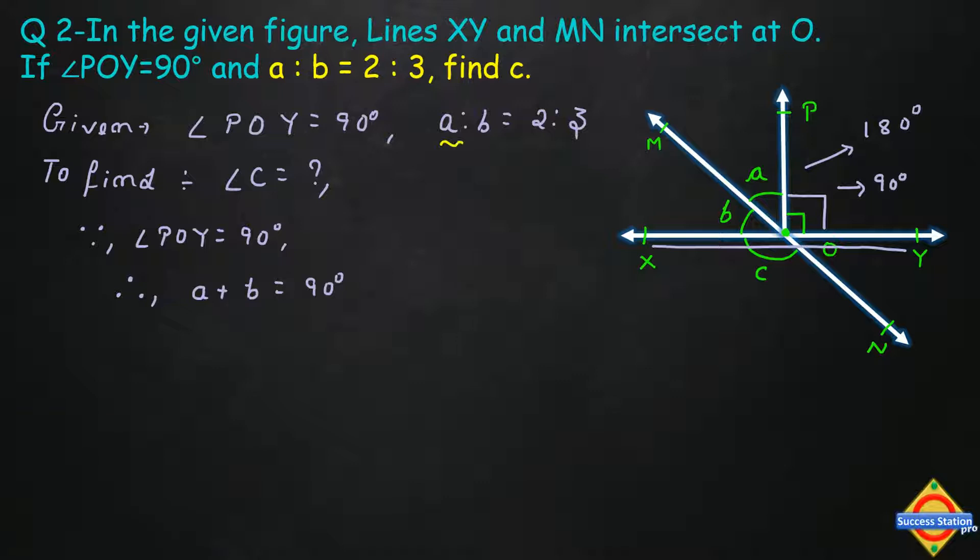Now, a ratio is given between angles A and B. So I will consider angle A as a variable. Let angle A be 2X and angle B be 3X. In any question, whenever a ratio is given, we solve it using one variable. If angle A's value is 2X and angle B's value is 3X, call this equation 1. I will put the values of A and B in equation 1. Therefore, 2X plus 3X is equal to 90 degrees.